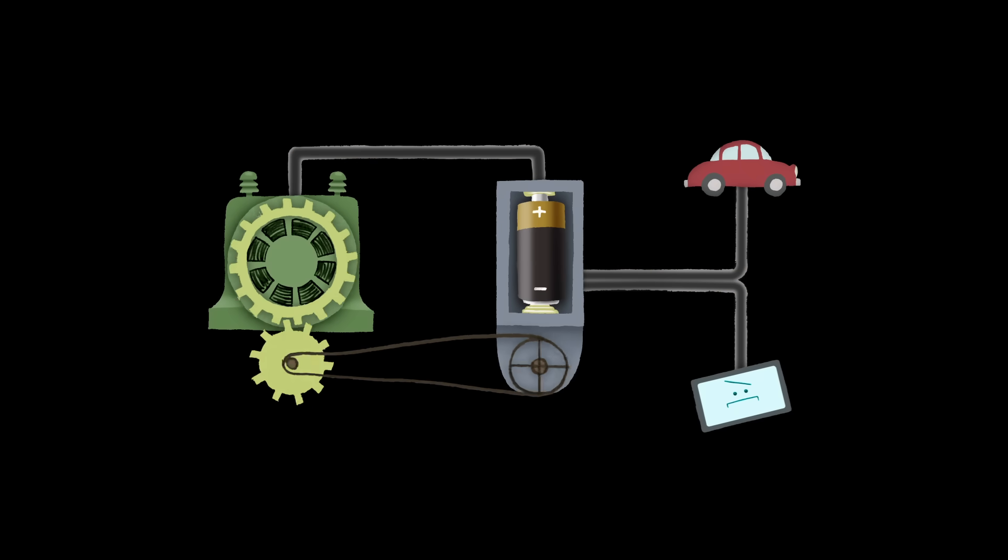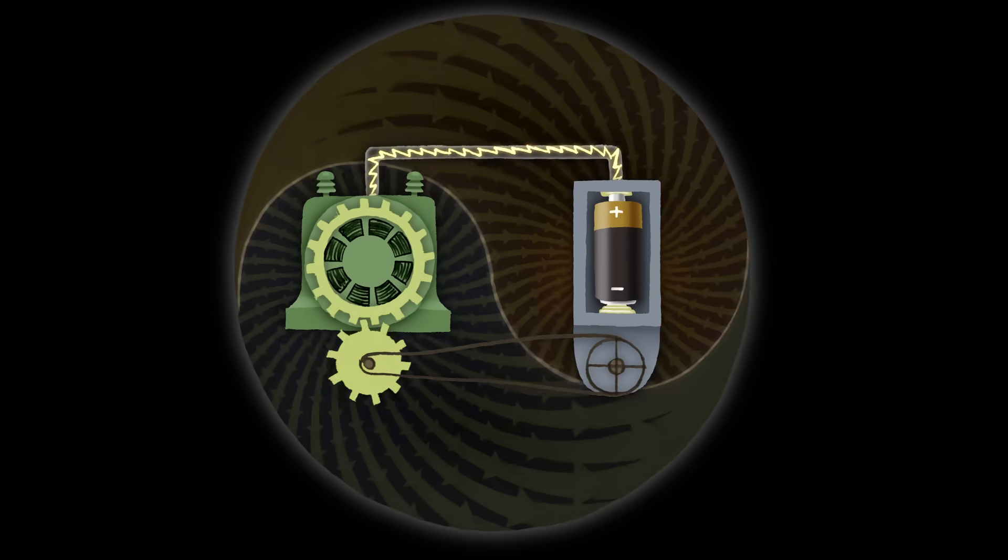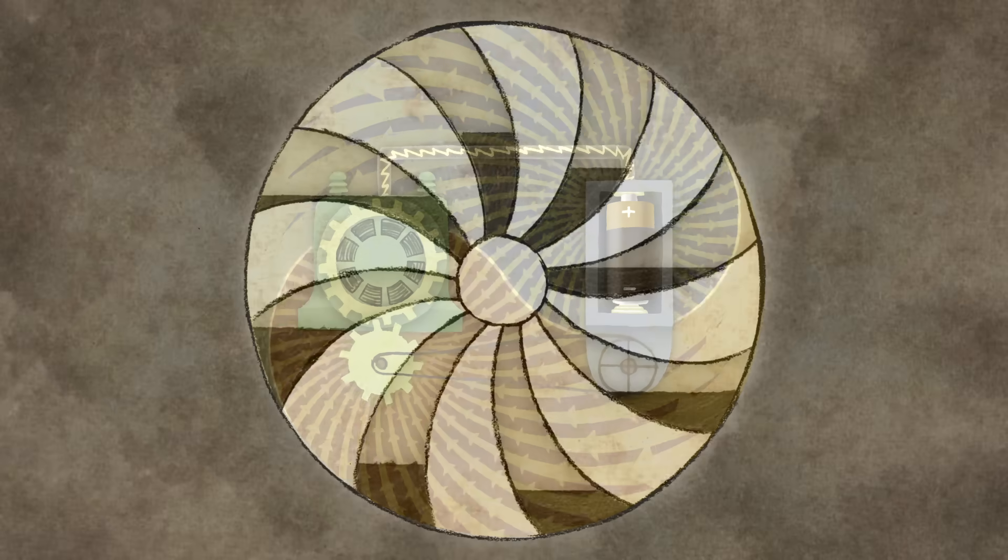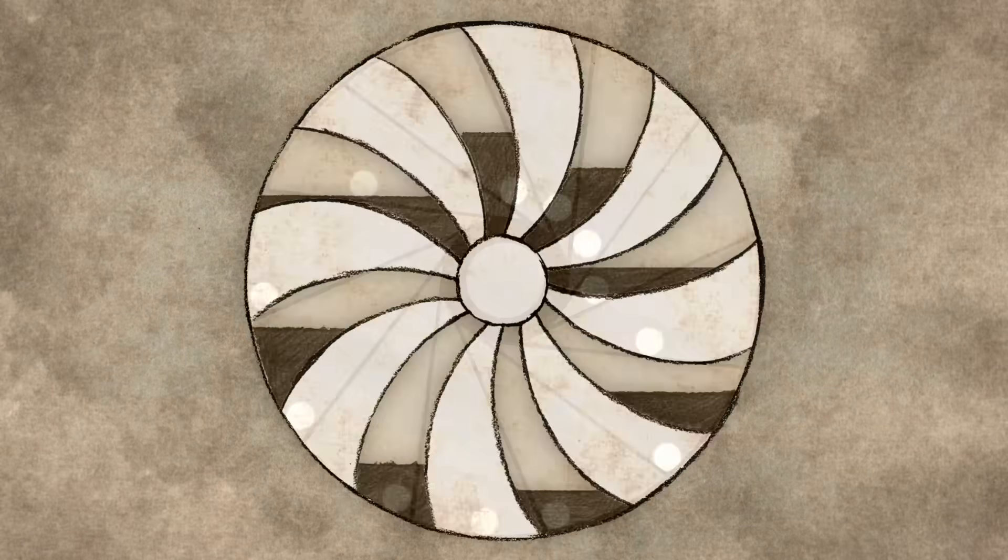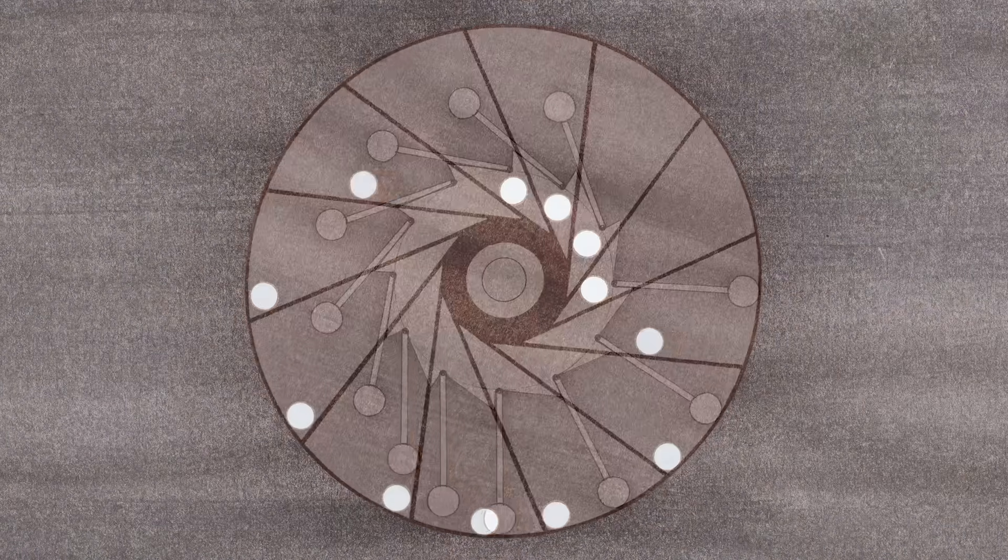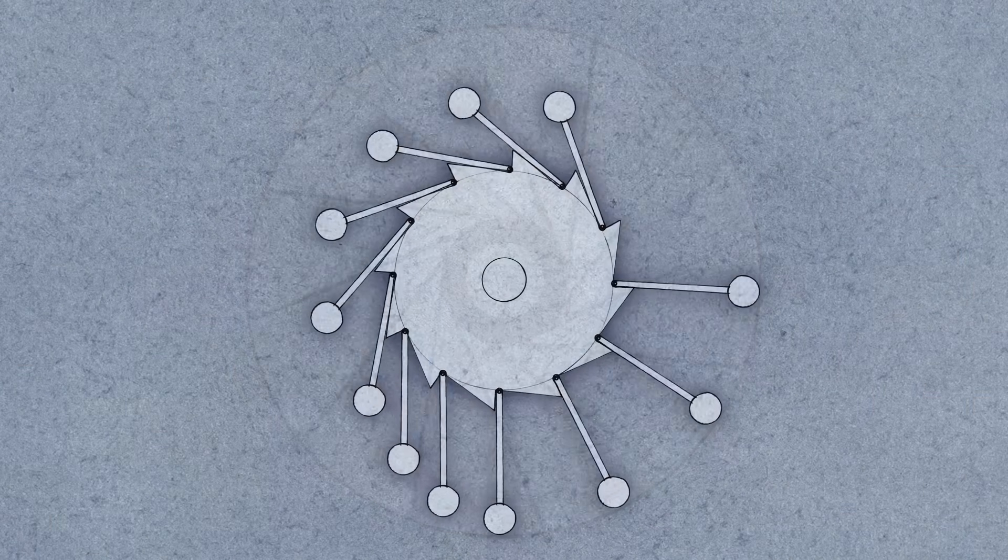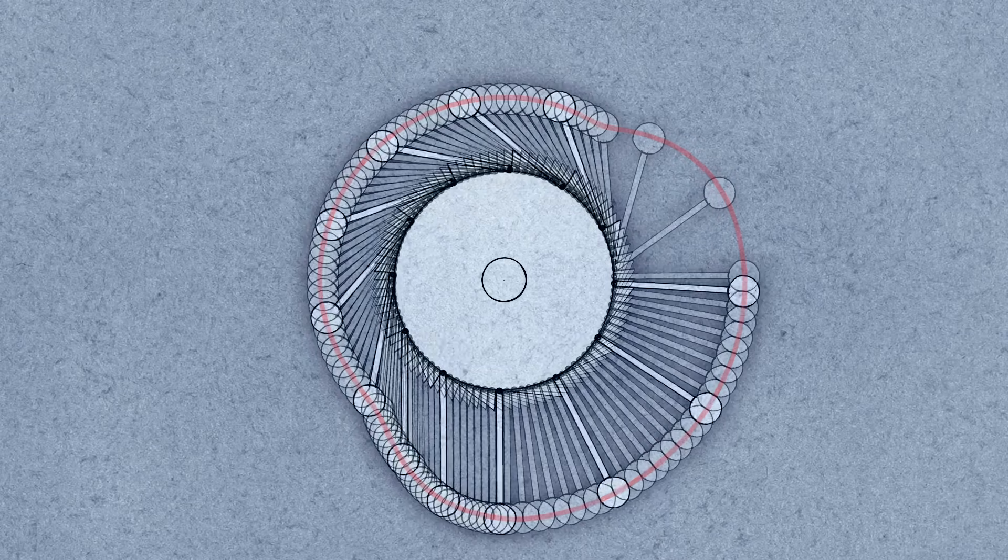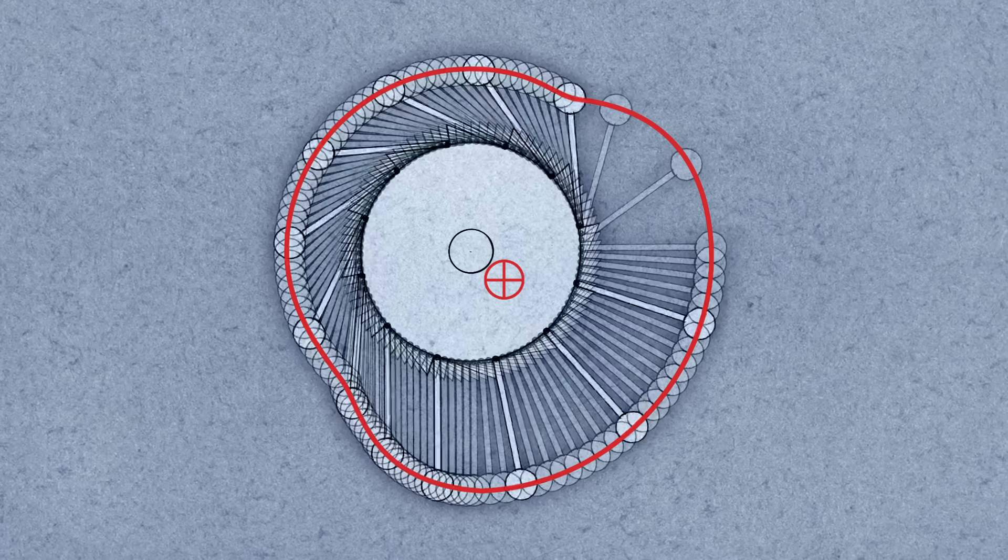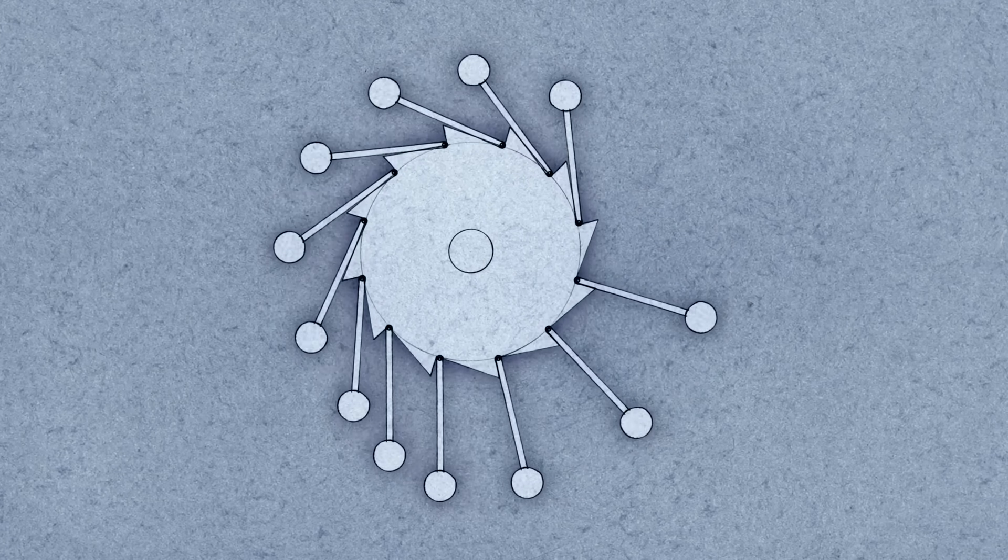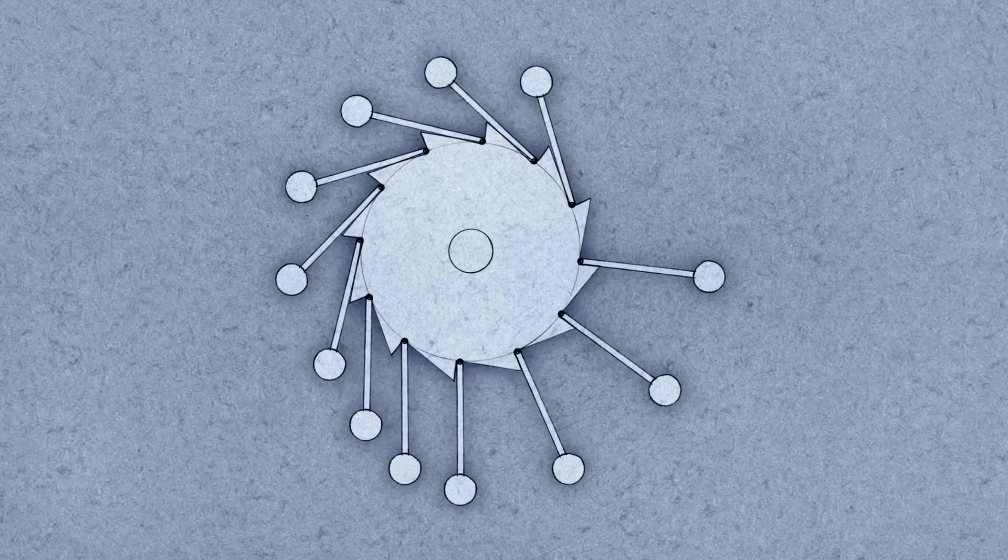But what if you just wanted the machine to keep itself moving? Inventors have proposed plenty of ideas. Several of these have been variations on Bhaskara's overbalanced wheel, with rolling balls or weights on swinging arms. None of them work. The moving parts that make one side of the wheel heavier also shift its center of mass downward, below the axle. With a low center of mass, the wheel just swings back and forth like a pendulum, then stops.